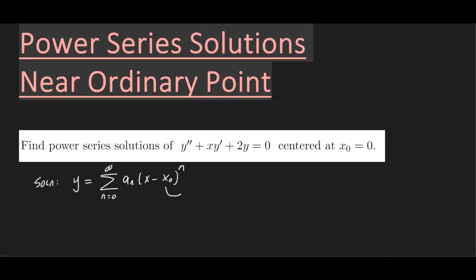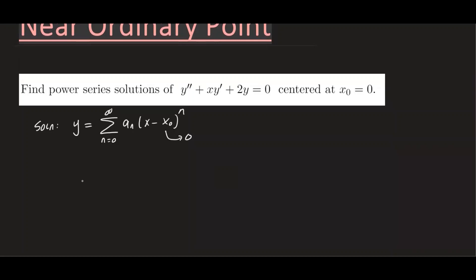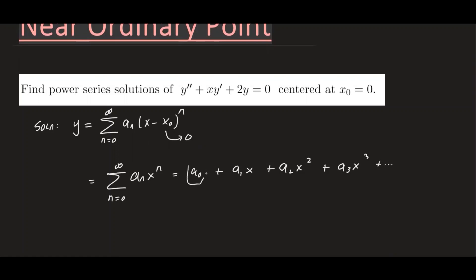Because x₀ is zero, we can reduce this to the sum from n equals zero to infinity of aₙ x to the power n. Writing out a couple of terms, we have a₀ plus a₁x plus a₂x² plus a₃x³ and so forth. So we're really looking for what these coefficients are for this particular example.